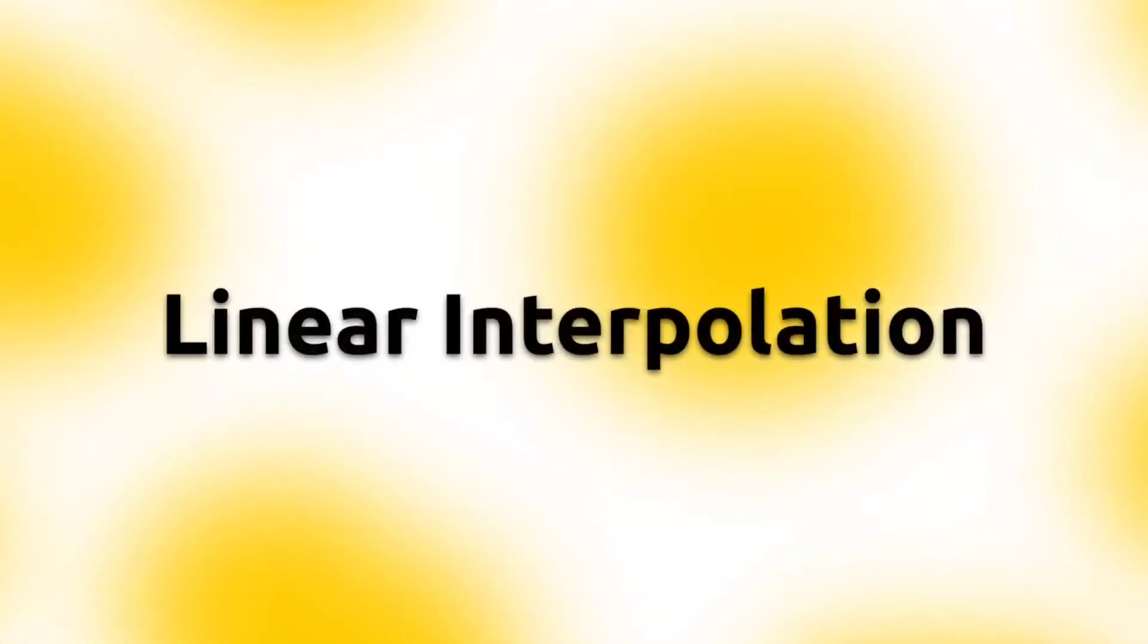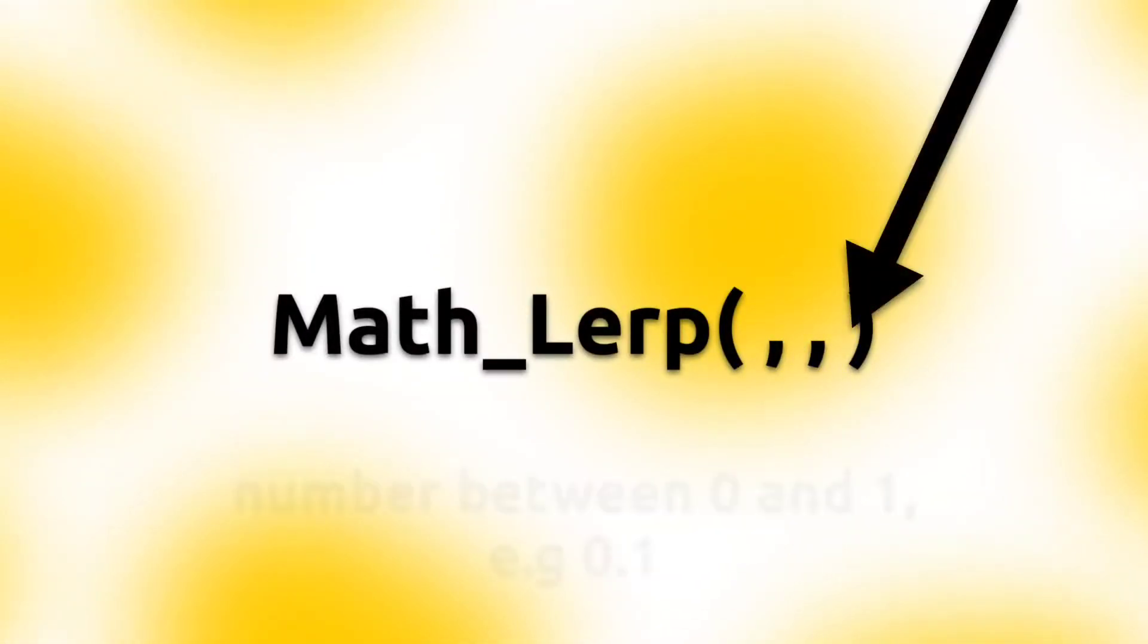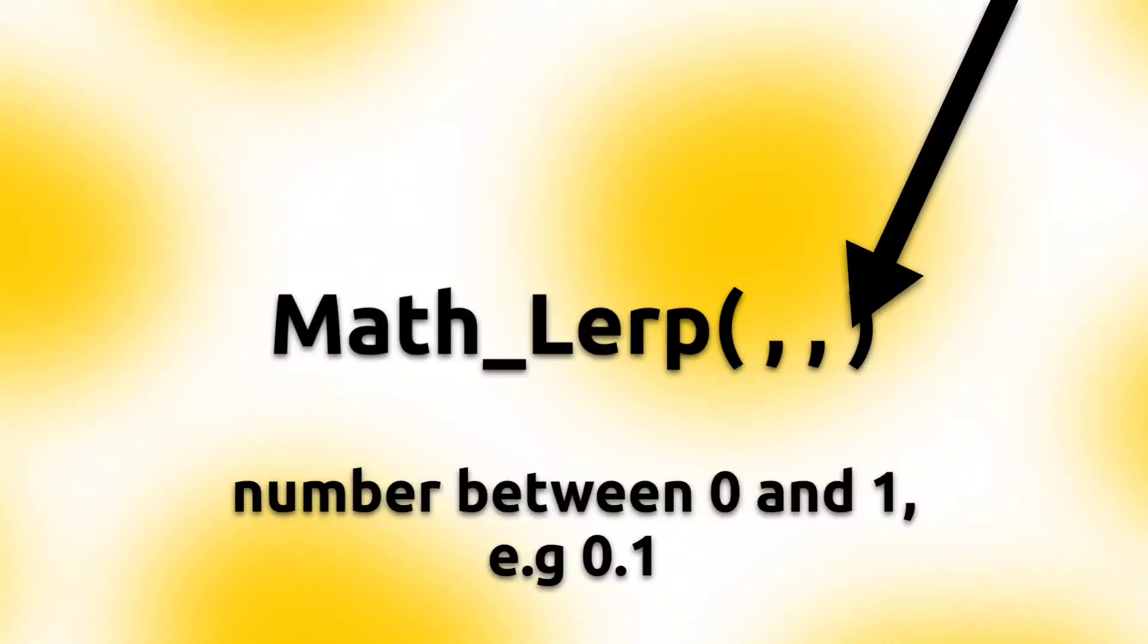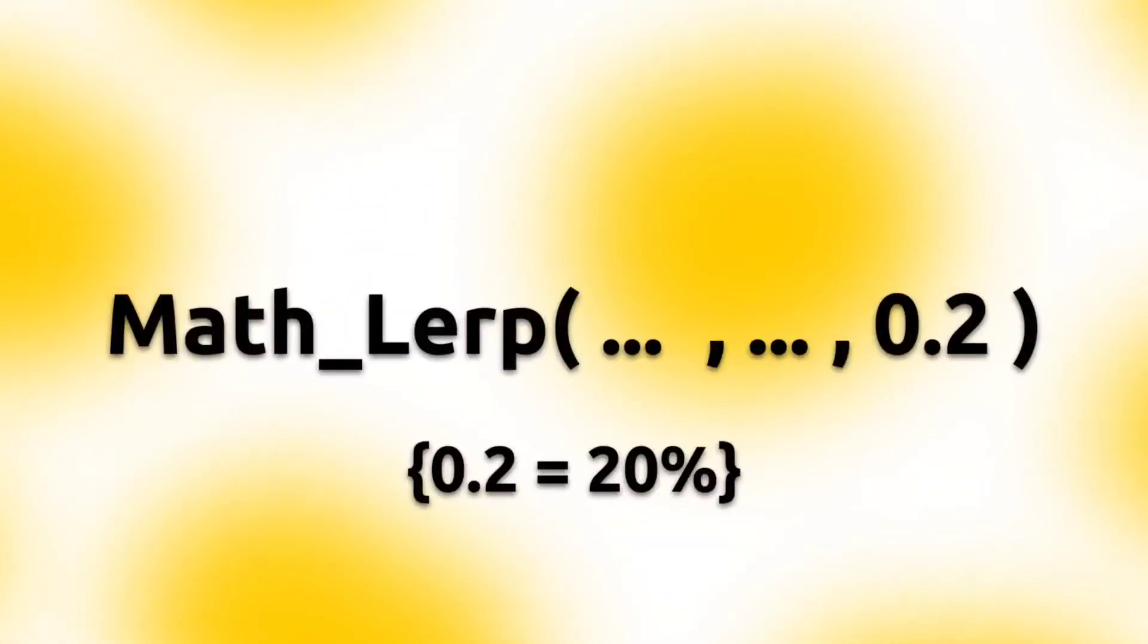Math Lerp means linear interpolation and changes your value nearer to the end value. The first slot is the start value, second one the end value, and the third one is the percentage of how much the value will increase. You can say it is the percentage.